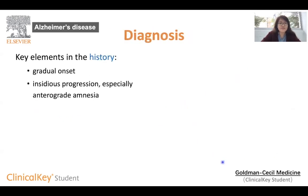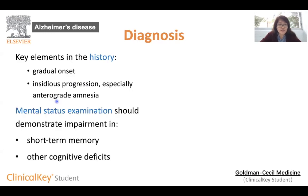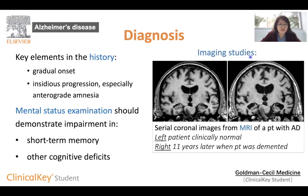To diagnose Alzheimer's disease, doctors look at the history to see if symptoms are of gradual onset and progress insidiously, especially if there is an anterograde amnesia. Neuropsychological examination typically reveals short-term memory impairment. And finally, imaging studies will show loss of vulnerable brain regions like the hippocampus.